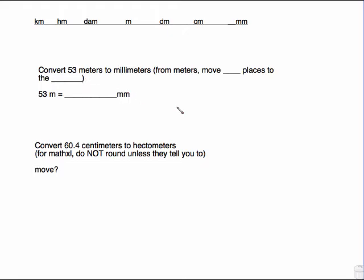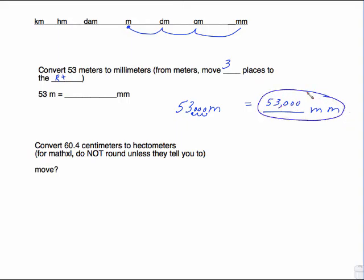So convert 53 meters to millimeters. From meters to millimeters, meters is right here. To get to millimeters, I'm going to move one, two, three. I'm going to move three places to the right. So I take this decimal that's sitting right here and move it one, two, three. And each of those little waves, we need to put zeros, and that's 53,000. So 53 meters is equal to 53,000 millimeters.